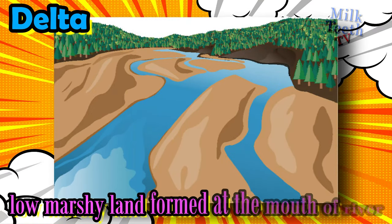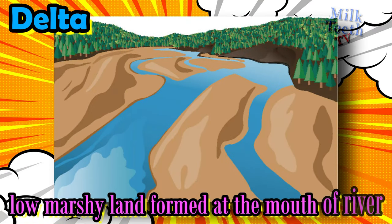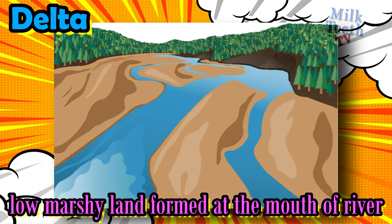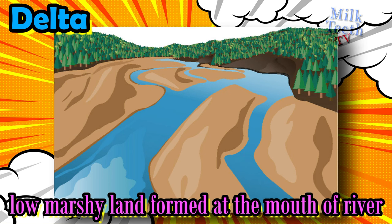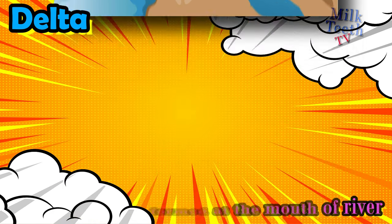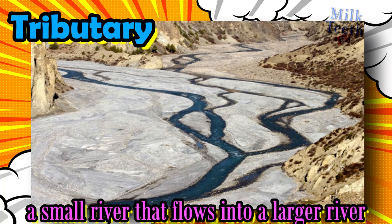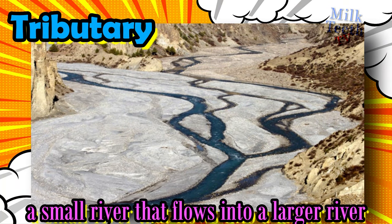Delta: low marshy land formed at the mouth of a river, when the river divides into a number of channels before entering the ocean. Tributary: a small river that flows into a larger river.